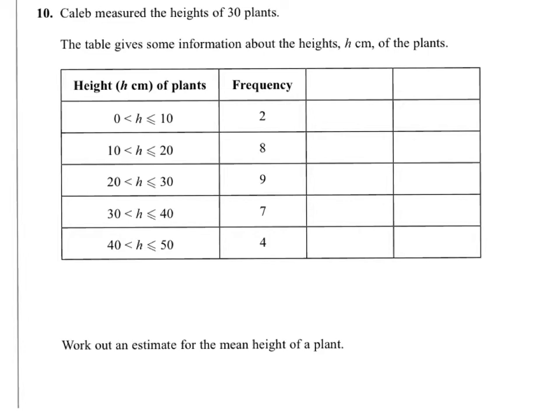So you should know that the first thing you need to do is find your midpoints of your intervals. The midpoint between 0 and 10 is found by adding the two interval beginning and end together and dividing by 2. So that will give you 5. And then we'll have 15, 25, 35, and 45.